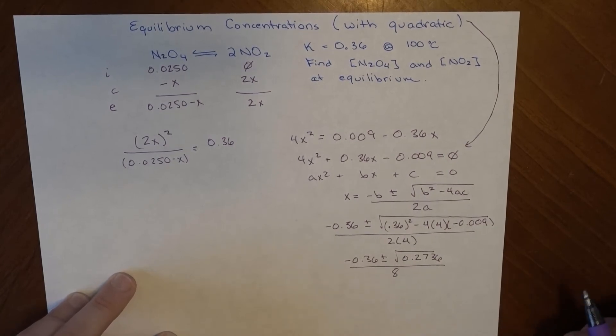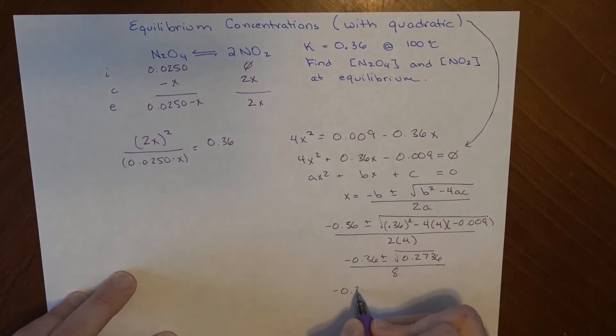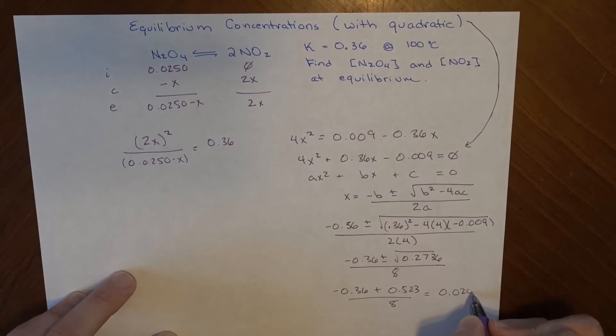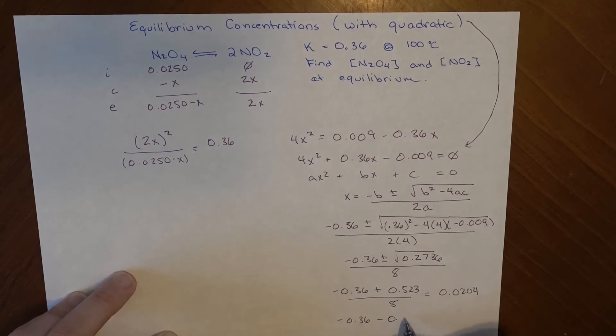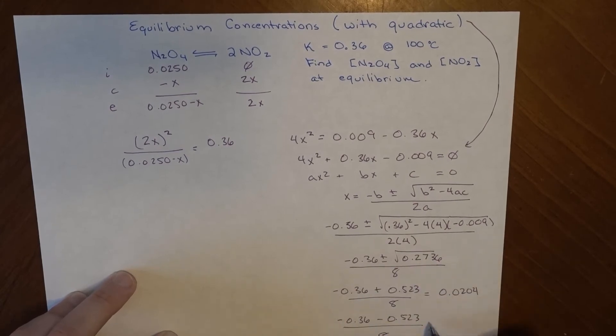And when I evaluate this, I get one of two expressions. So negative 0.36 plus, I'm going with the plus one here first, 0.523 over 8, and that gets me to 0.0204. Or negative 0.36 minus 0.523, because it's plus or minus over 8, and I get this negative number, 0.110.